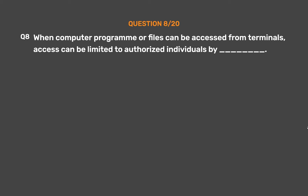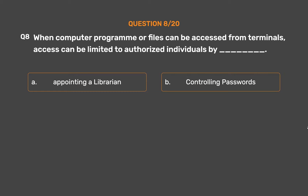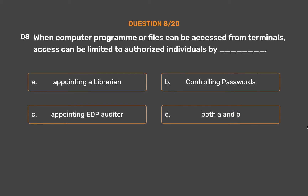Question number 8. When computer programs or files can be accessed from terminals, access can be limited to authorized individuals by underscore. Option A: Appointing a librarian. Option B: Controlling passwords. Option C: Appointing EDP auditor. Option D: Both A and B.